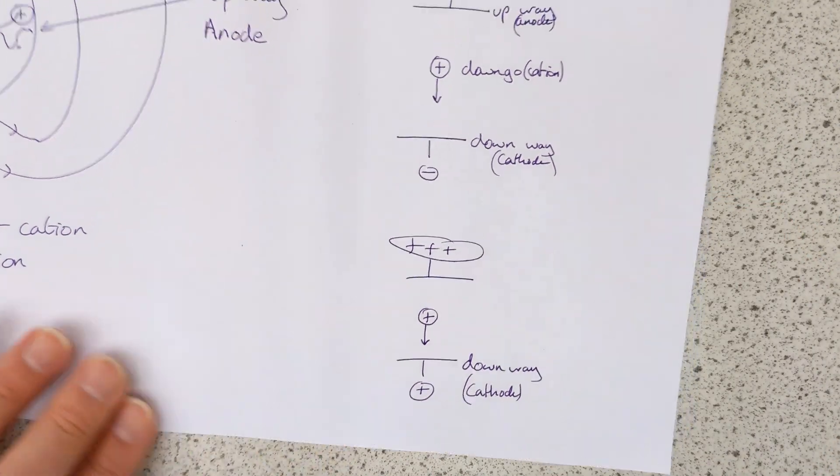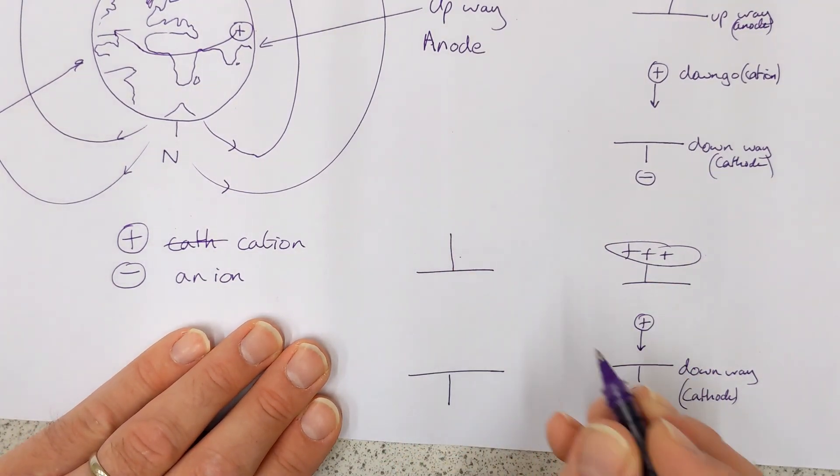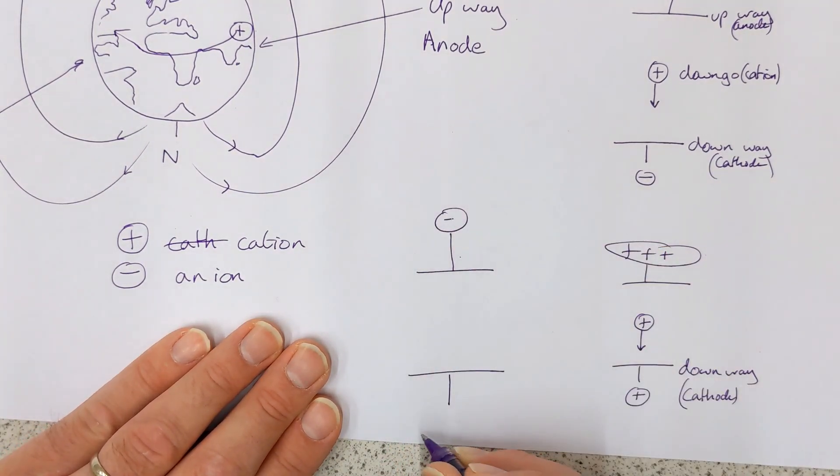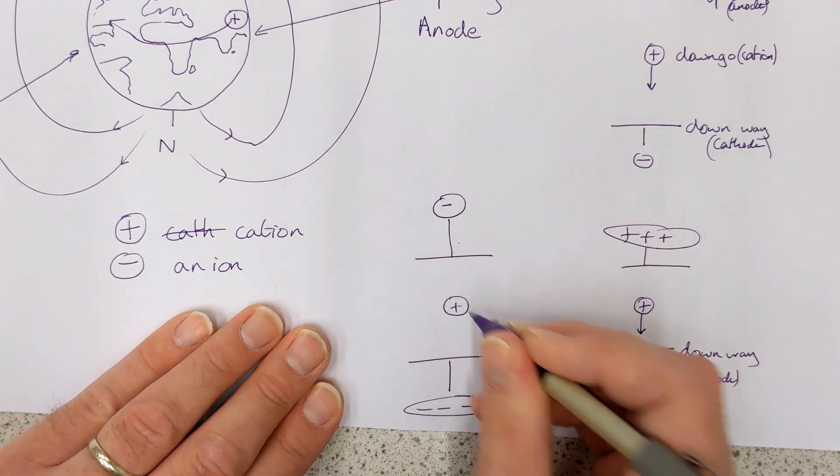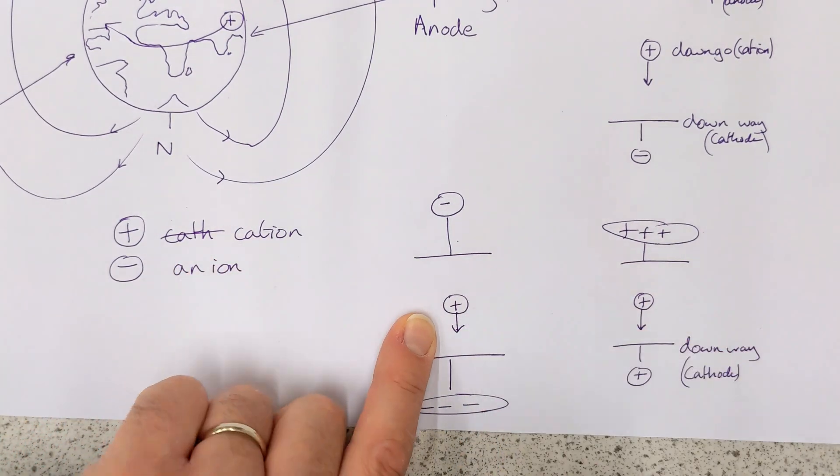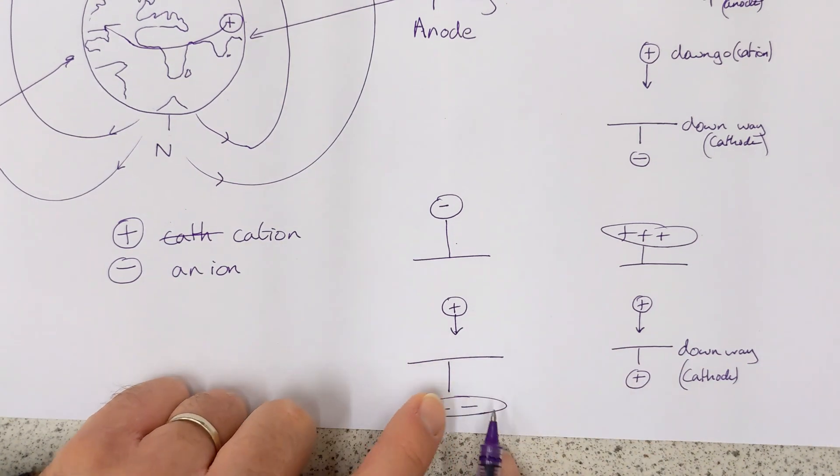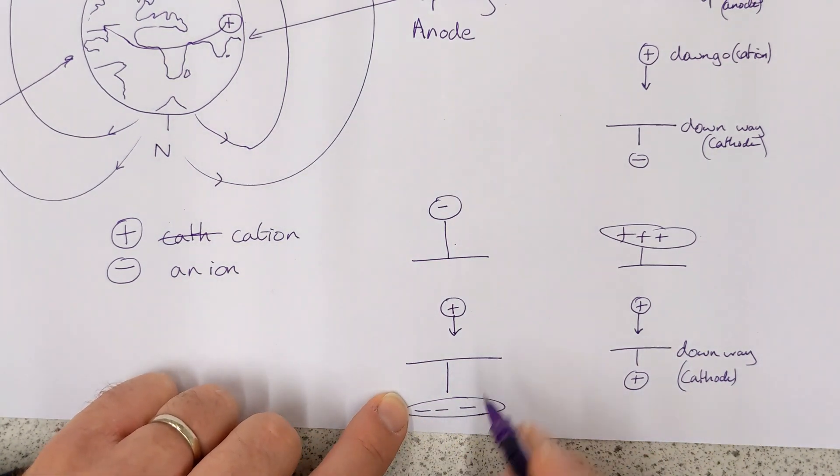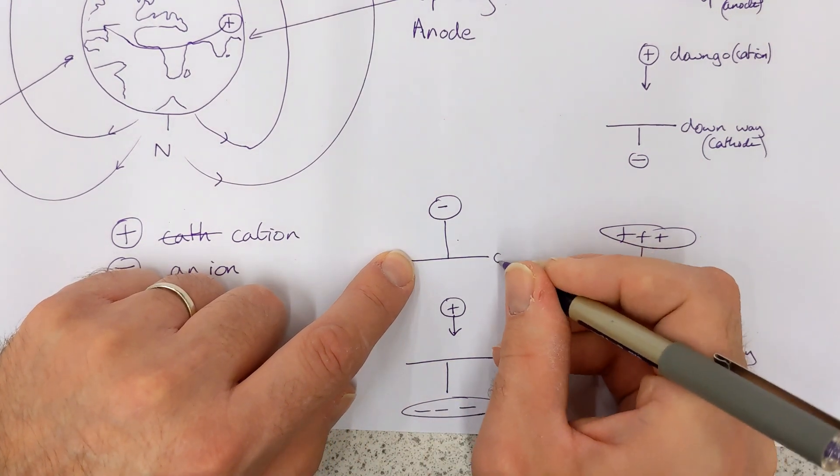And this is your anode. And it is absolutely possible, of course, to do the same thing where this is a negative charge and this is a much more negative charge or terminal, should I say. And in this case, you take a positive particle and, yes, this is a cation and it's going down. It's a down go particle, which means this is the down way, which means this is a negative cathode. You'd find that this one is a negative anode.